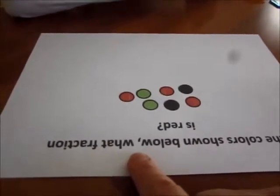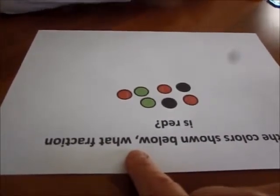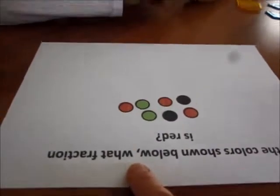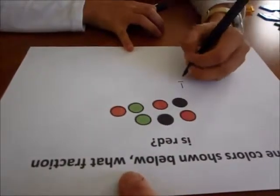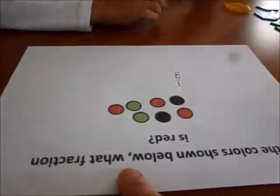How many colors are there? One-third. So the fraction of the colors that are red is one-third.